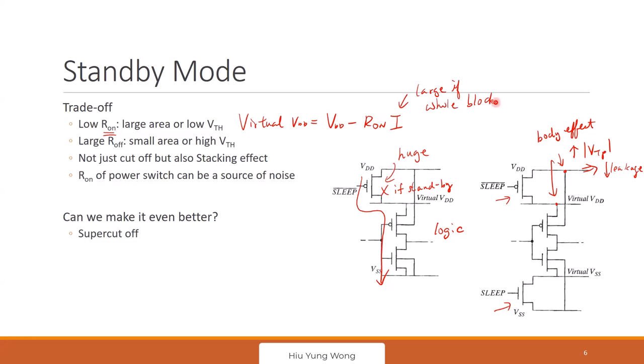So, if your R on is large, so-called large may be actually very small, but because the current is large, you are not getting the VDD 1.2 volts. You may get 1.1 volts. Then your noise margin will reduce substantially. But at the same time, you want to make the R off large. So that you can cut off when you turn it off.